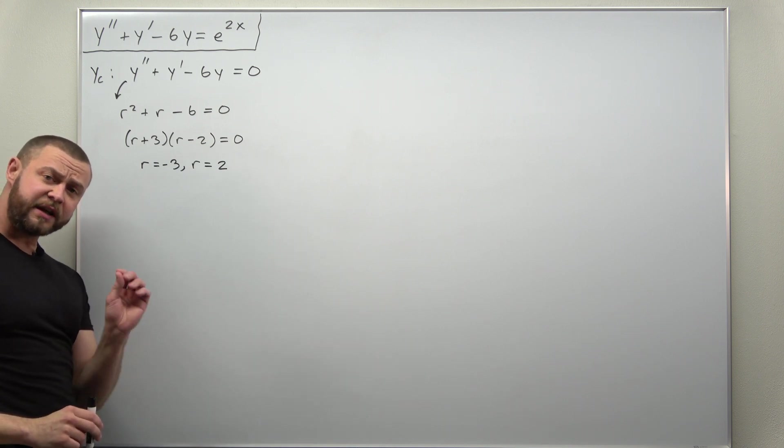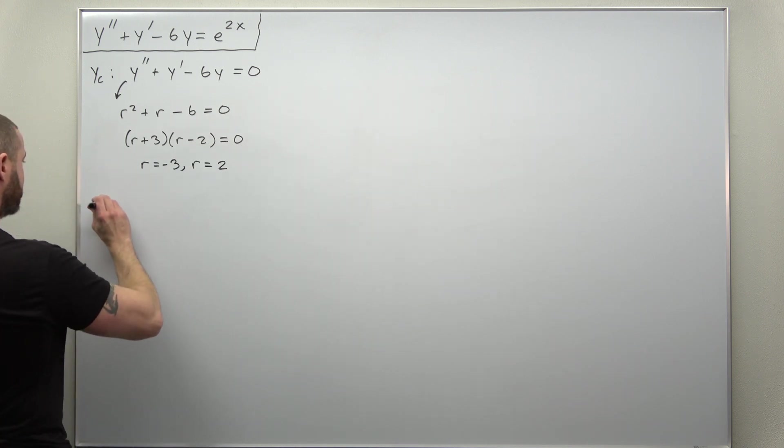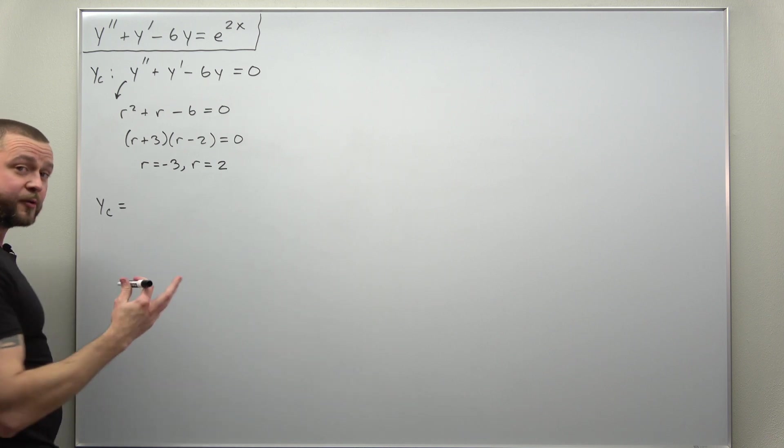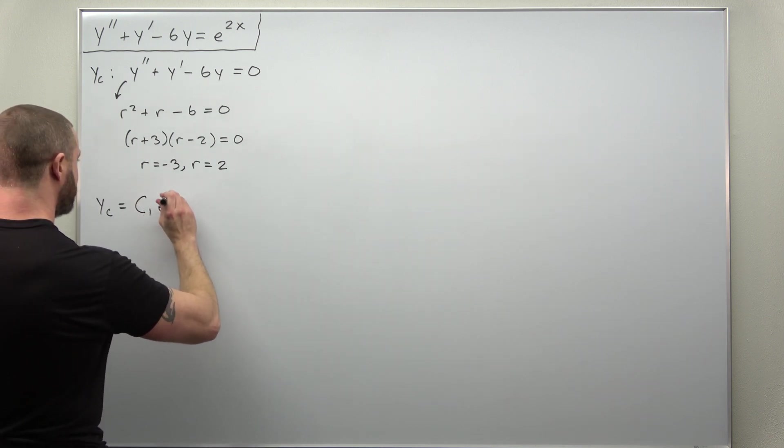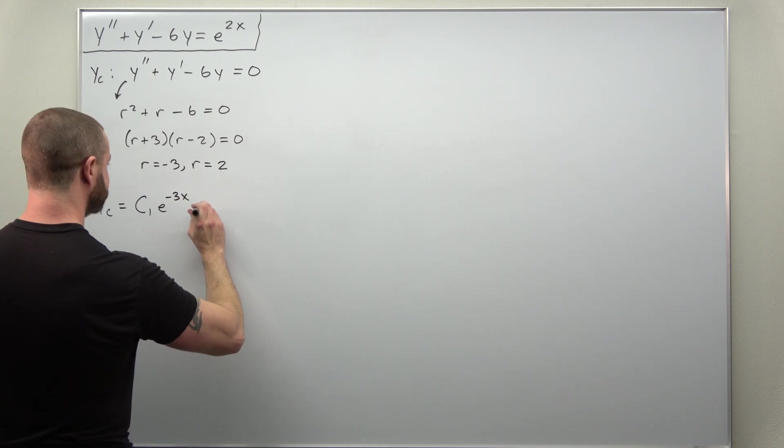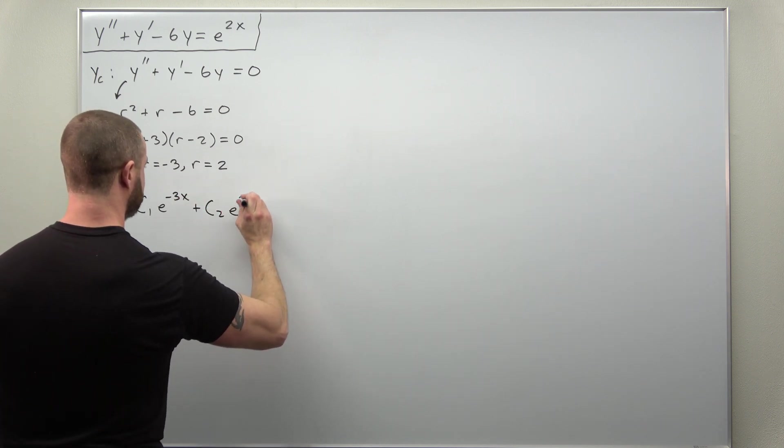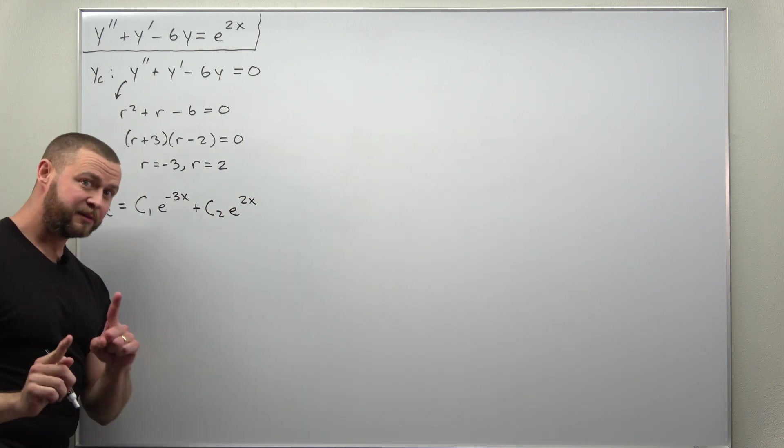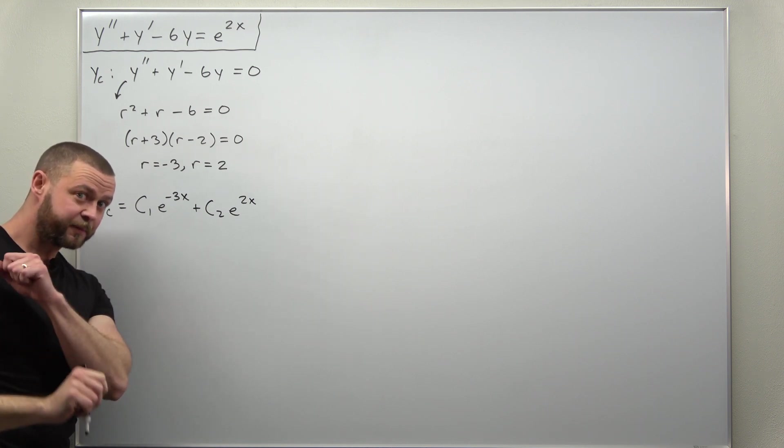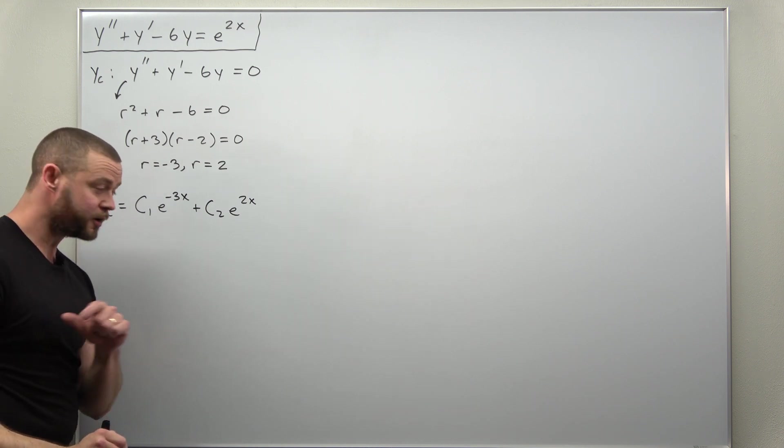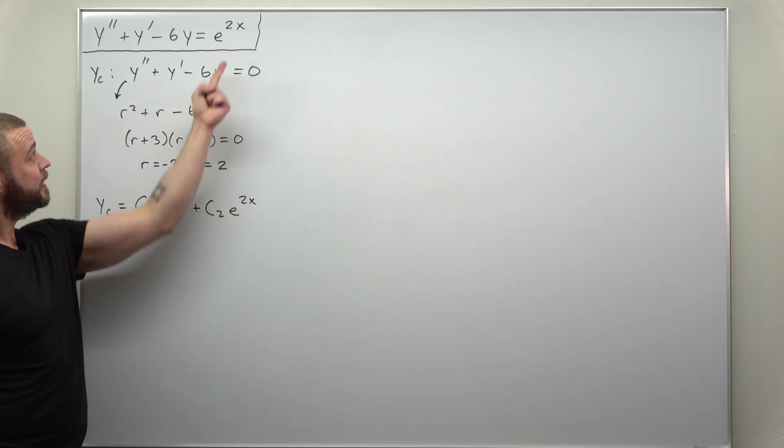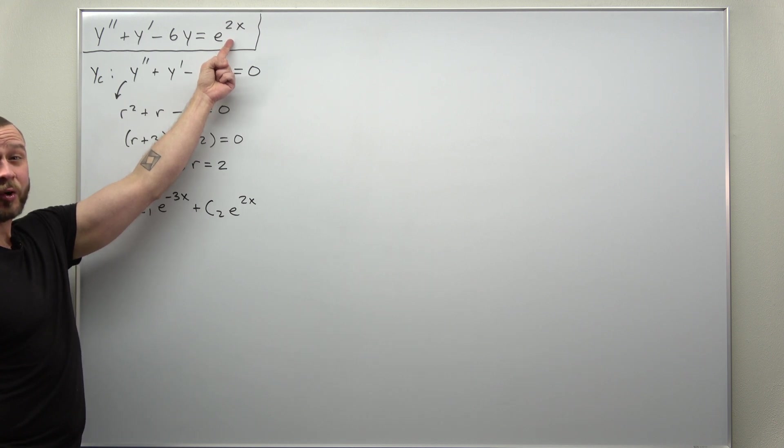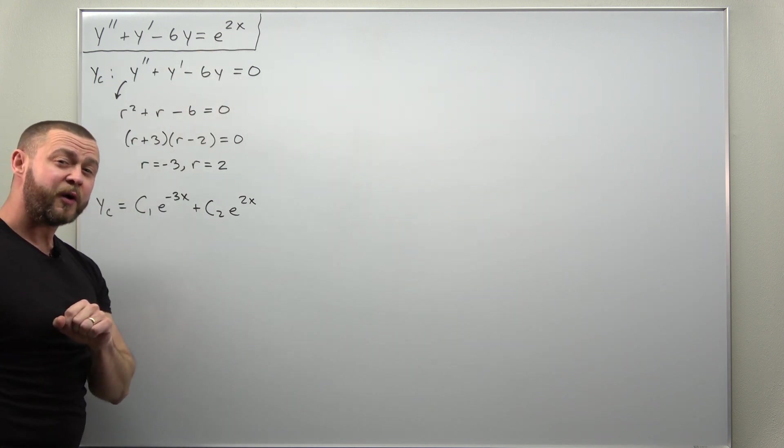Each of those values gives us an exponential function. So we can write down our complementary solution: C₁e^(-3x) + C₂e^(2x). And be careful here. Notice your complementary solution here contains a term that is identical to the right-hand side.